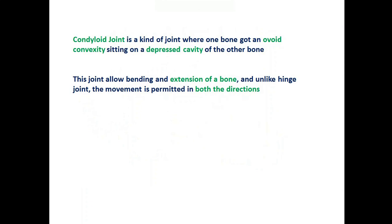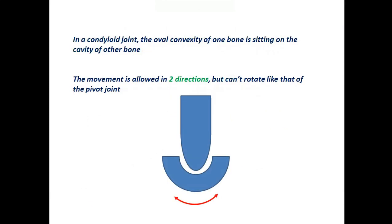In a condyloid joint, the oval convexity of one bone is sitting on the cavity of the other bone. The diagram below clearly shows it. The movement is allowed in two directions but can't rotate like that of the pivot joint.